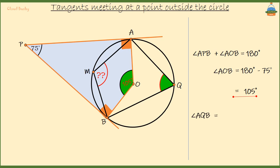That means angle AQB should be half of angle AOB. This is because the angle at the center is always two times the angle at the circumference. So angle AQB is equal to half of 105 degrees. That is 52.5 degrees.